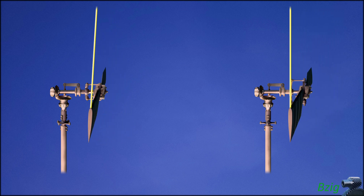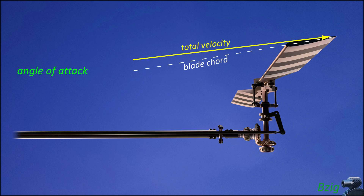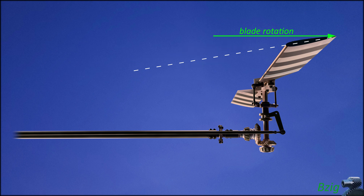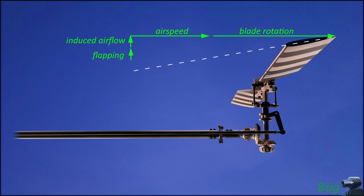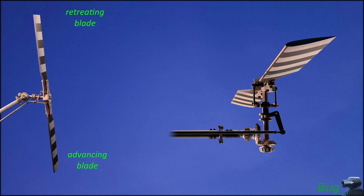I covered the aerodynamic reasons why pitch flap coupling is needed in my Blackhawk tail rotor video — here's a review. Angle of attack is the angle between the chord line of the blade and the total velocity vector of the air approaching the blade. In helicopters, the blade's total velocity vector consists of four components: a component due to blade rotation, a component due to forward flight speed, a component due to induced air flow through the blade, and a component due to flapping. The forward flight speed component becomes larger on the advancing blade and smaller on the retreating blade, introducing a forward flight dissymmetry of lift.